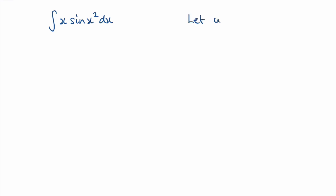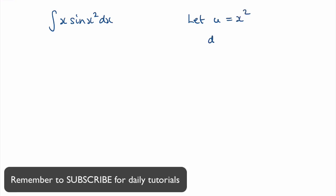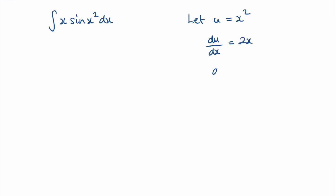I'm going to say let u equal x squared. So du by dx would be equal to 2x, and dx is equal to du over 2x.